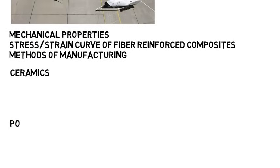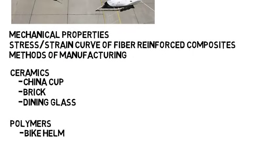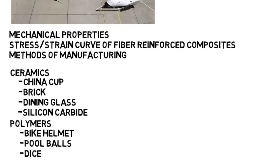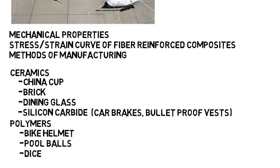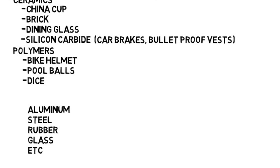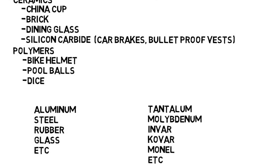Ceramics might be something like a china cup, a brick, or a dining glass. Polymers or plastics might include a bicycle helmet, pool balls, dice, and so on. In school you cover more advanced materials with engineering applications, like silicon carbide, which can be used to create very hard ceramics for applications ranging from car brakes all the way to bulletproof vests. There are many materials we've all heard of, but there are way more that you probably haven't — these are just a few out of hundreds in an intro textbook on materials engineering. This is a challenge of materials engineering: the sheer amount of materials out there, all with their different properties.